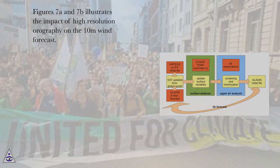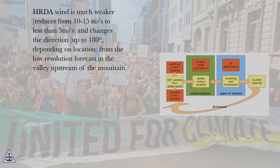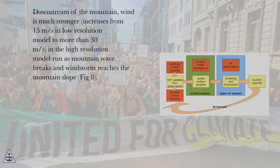Figures 7a and 7b illustrate the impact of high-resolution orography on the 10-meter wind forecast. HRDA wind is much weaker — reduced from 10–15 meters per second to less than 5 meters per second — and changes direction by up to 180 degrees depending on location, compared to the low-resolution forecast in the valley upstream of the mountain. Downstream of the mountain, wind is much stronger, increasing from 15 meters per second in the low-resolution model to more than 30 meters per second in the high-resolution model run, as the mountain wave breaks and the windstorm reaches the mountain slope (Fig. 8).